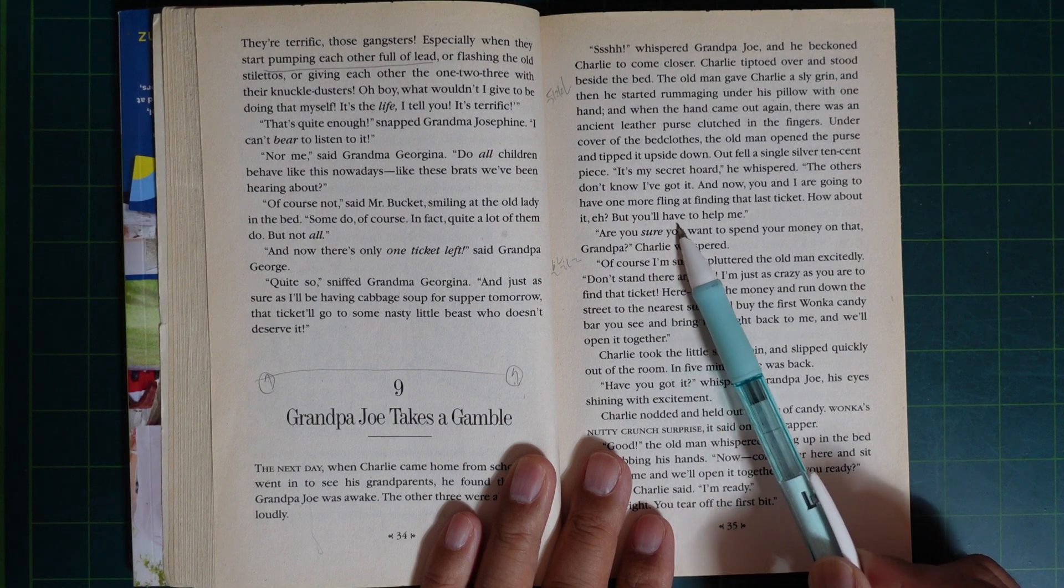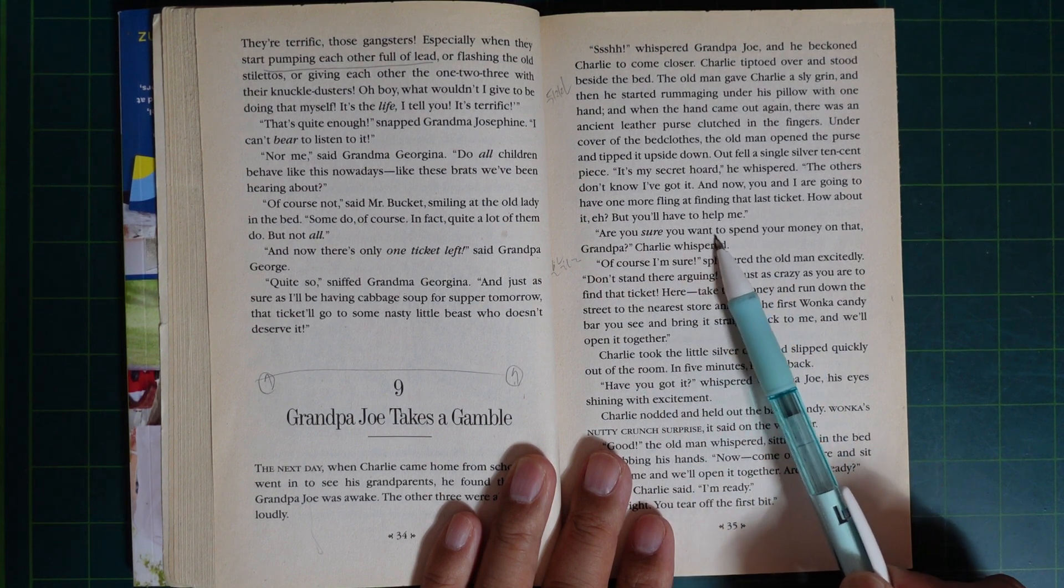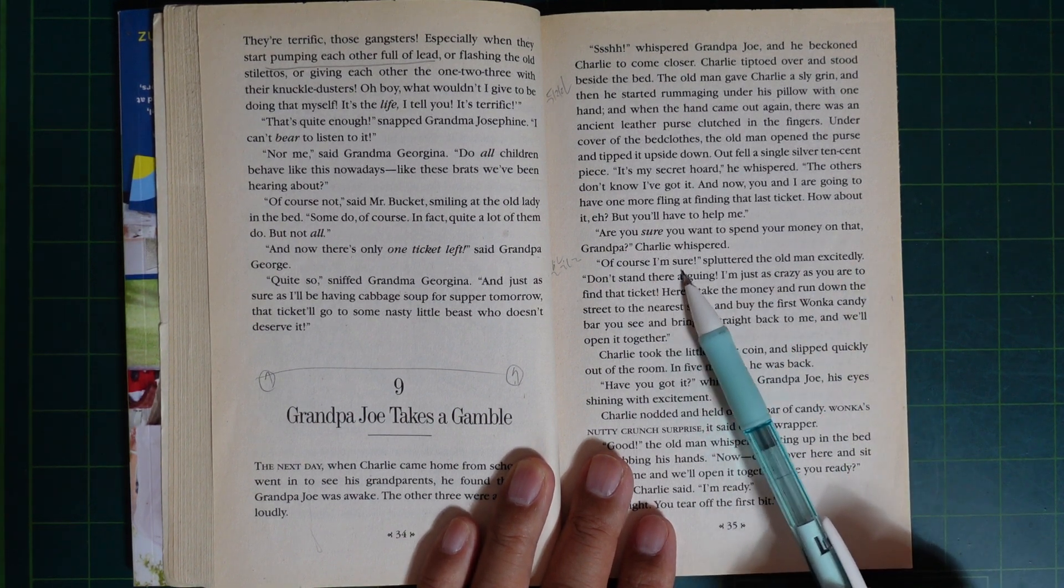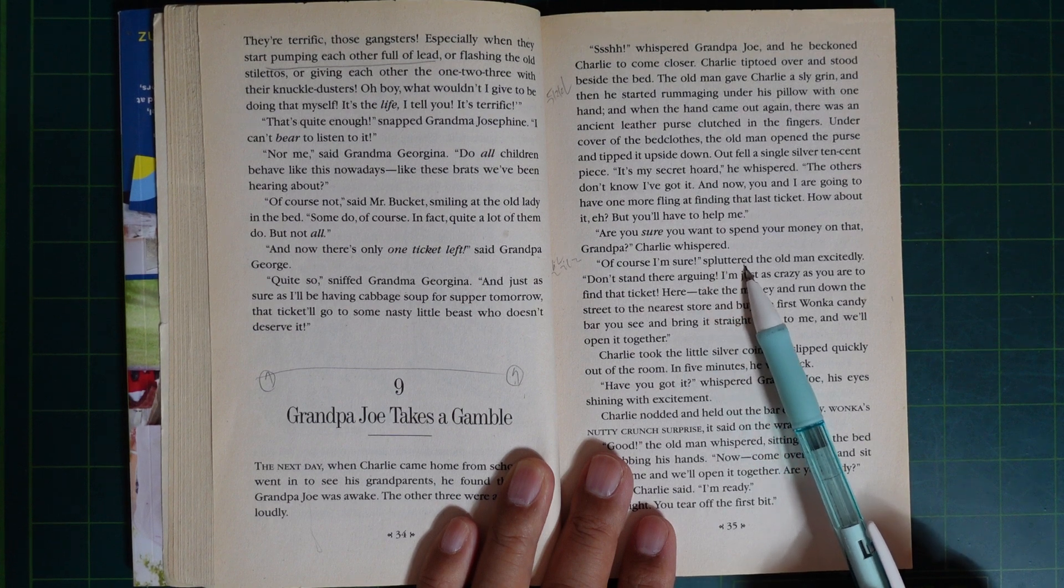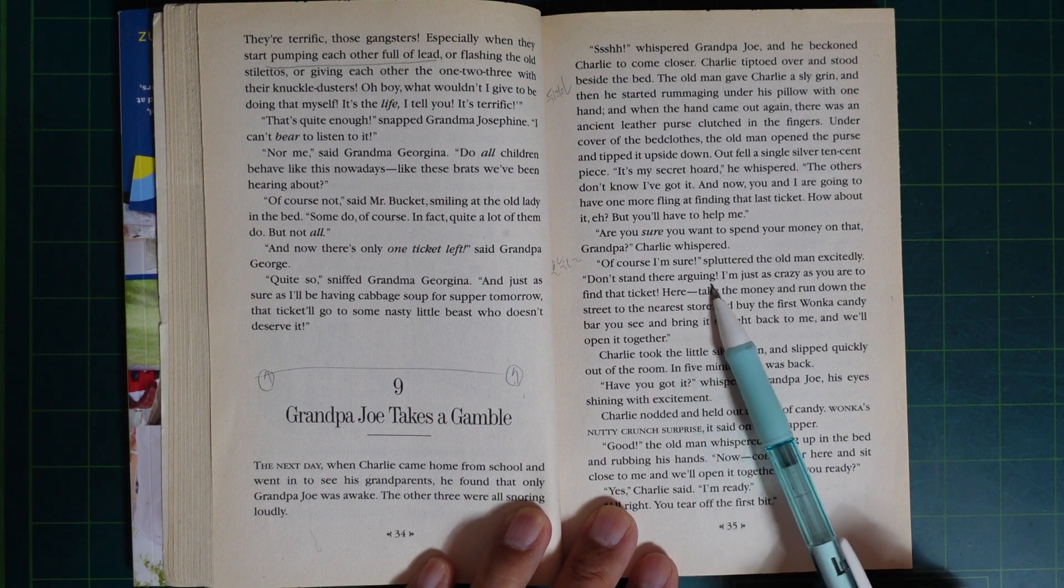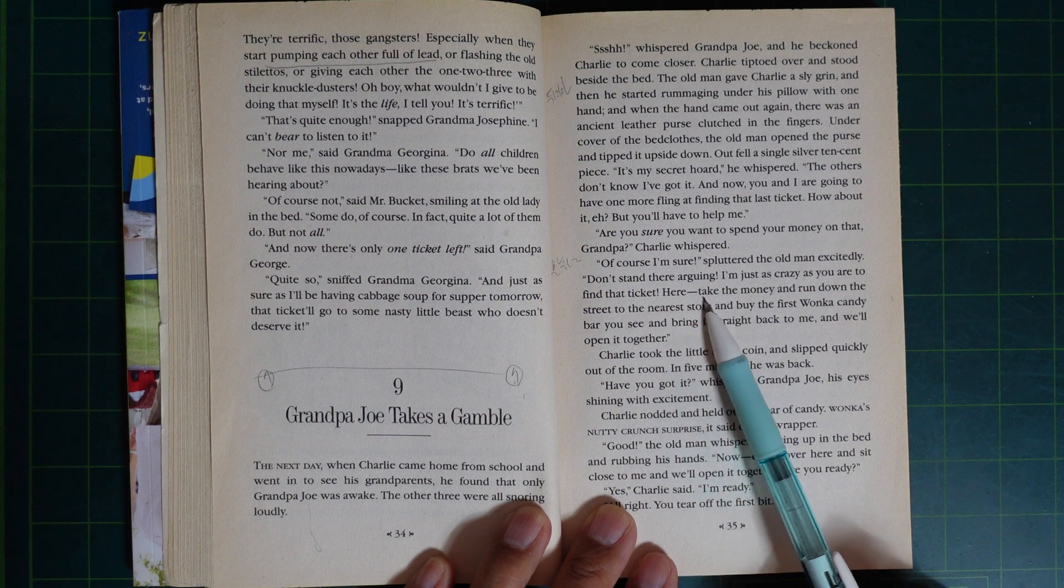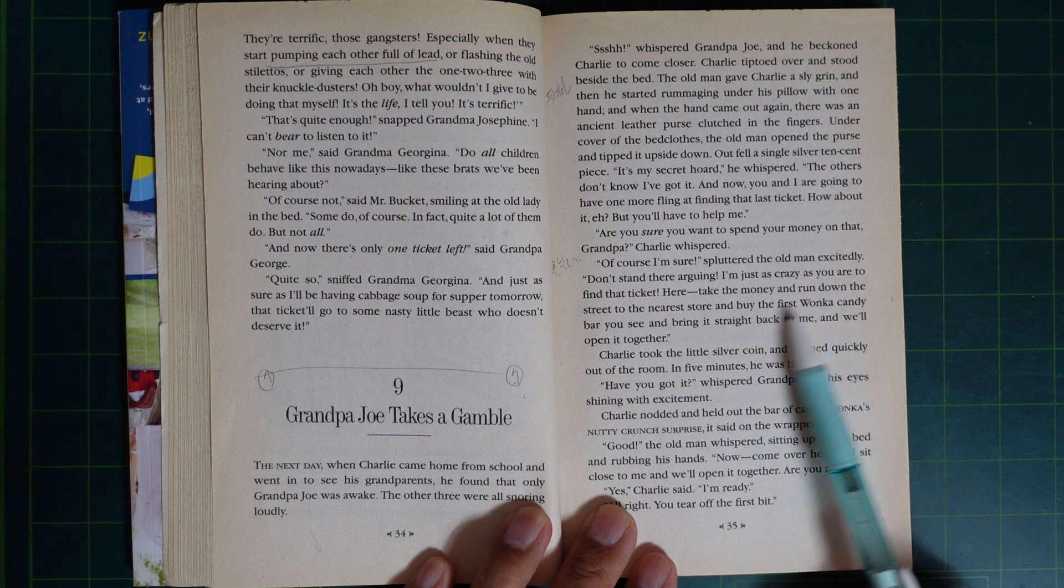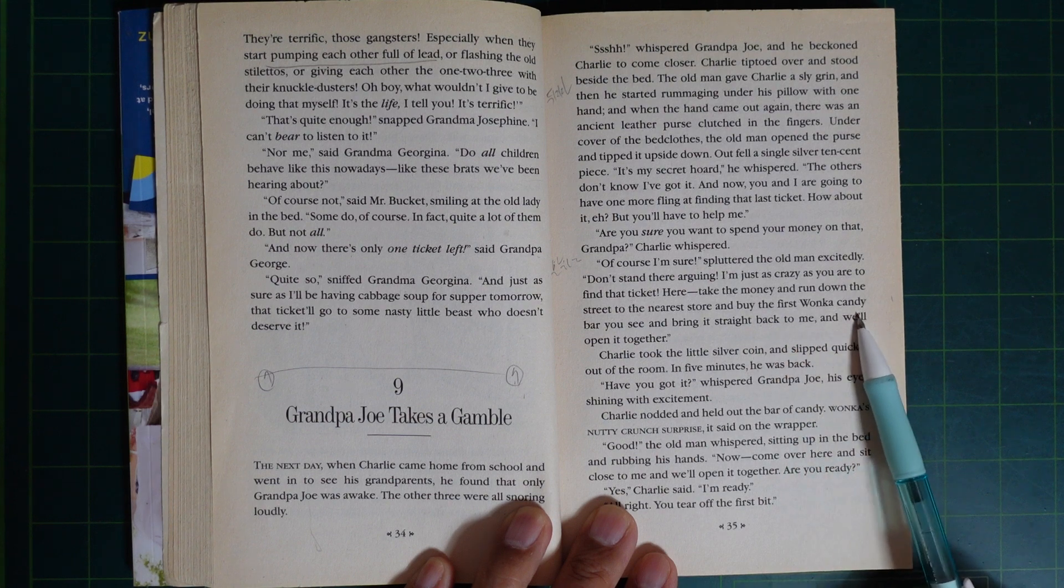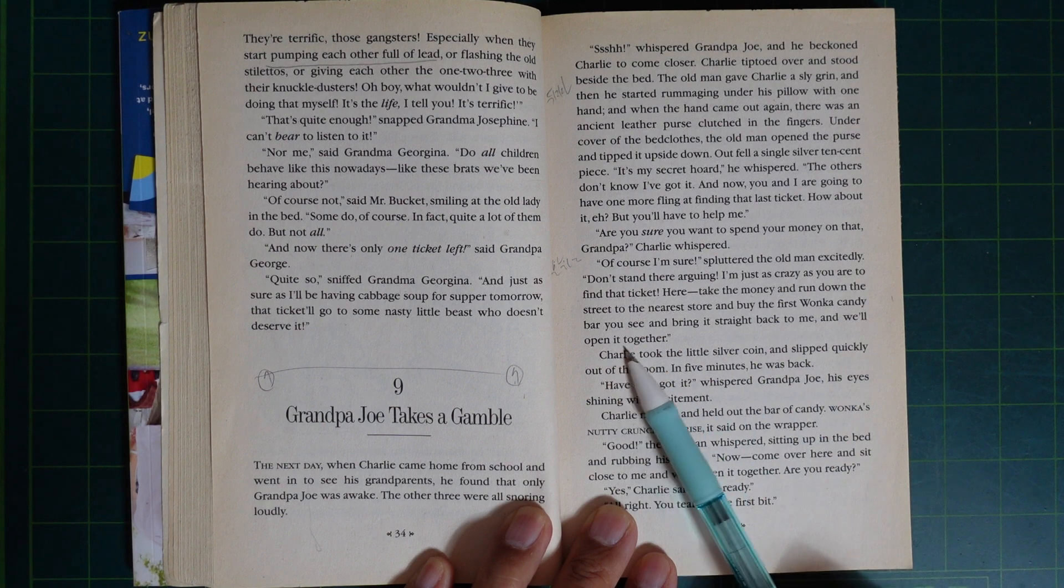Are you sure you want to spend your money on that, Grandpa? Charlie asked. Of course I'm sure, spluttered the old man excitedly. Don't stand there arguing. I'm just as crazy as you are to find that ticket. Here, take the money and run down the street to the nearest store and buy the first Wonka candy bar you see, and bring it straight back to me. And we will open it together.